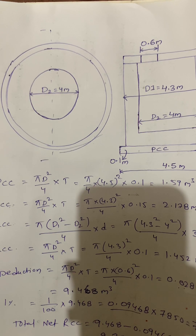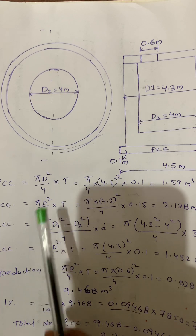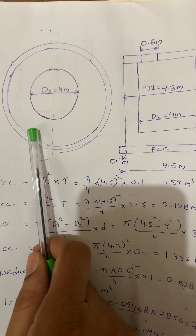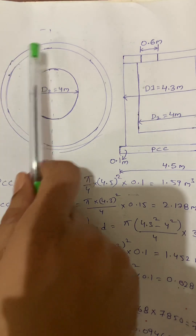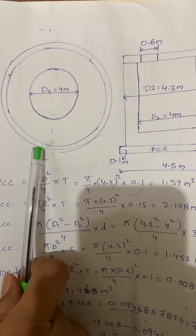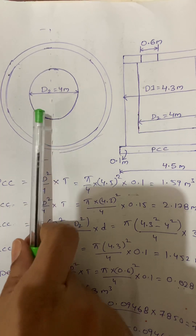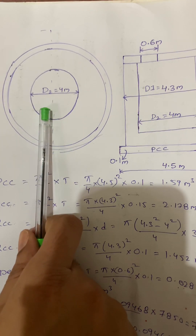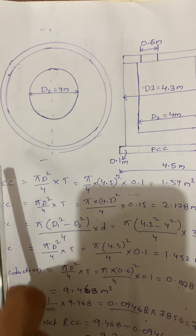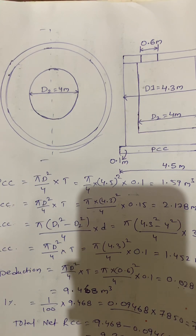Hello everyone. In this video I am going to calculate concrete quantity for the given circular tank. This is a circular tank with outer diameter of 4.3 meters, inner diameter of 4 meters, and depth of the tank is 3 meters.